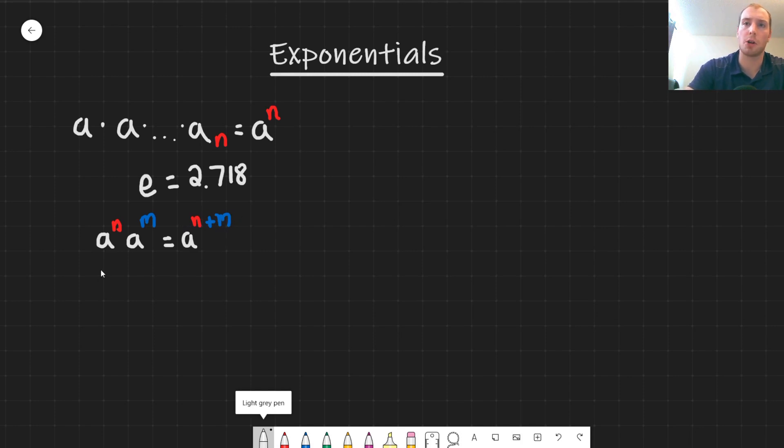So now we have a single base with just one exponent where we can add the two n and m's together. Similarly we can do division, so a raised to the power of n and then divided by a raised to the power of m. And this is equivalent to a to the power of n minus m. And our final one that we have is going to be a power. So if we have a raised to the power of n and then we raise all of this to the power of m, this can be simplified to a raised to the power of n times m. So we are just multiplying the two exponents together.